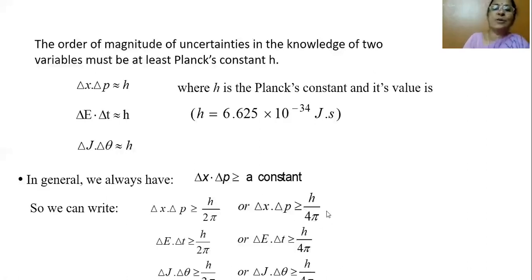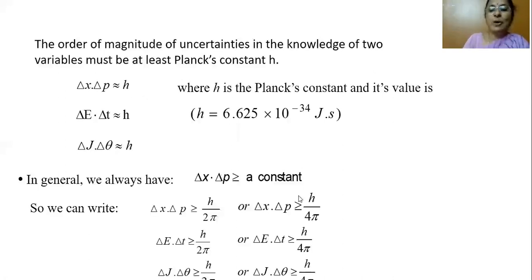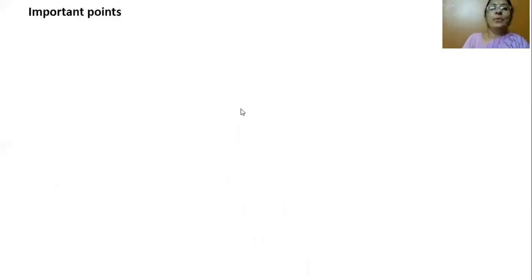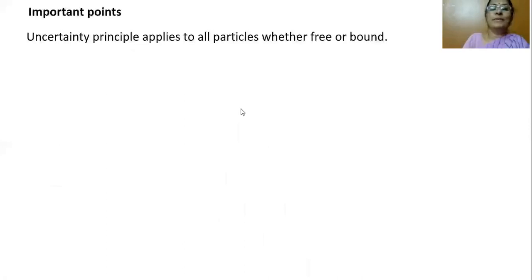So the product of uncertainties can be written as approximately equal to Planck's constant, or greater than or equal to h/2π, or greater than or equal to h/4π. You can say the product of uncertainties is nearly equal to Planck's constant, or Planck's constant divided by 2π, or Planck's constant divided by 4π.